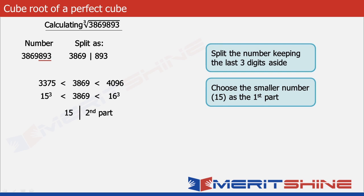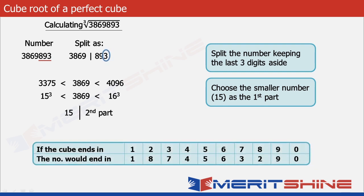For the second part, we look at the table. In our case the cube ends in 3, so as per the table the number must have 7 as its unit digit. Putting 7 in the second part and clubbing these two, we get our answer as 157.